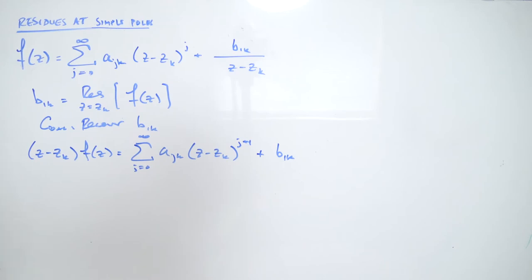So now we've isolated this B sub 1k, which is our residue. And now we can safely plug Z equal to Zk in. And that's going to get rid of this analytic part, leaving us with just the residue. And we have to be a bit careful with this on the left-hand side, because notice that Zk is a singularity of F of Z. So we can't directly plug in, we have to take the limit. So if we take the limit as Z approaches Zk of Z minus Zk times F of Z, then that's exactly the limit of this sum.